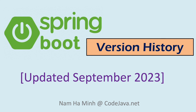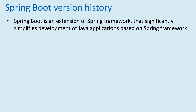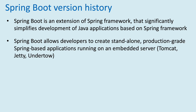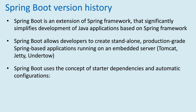In this video I'd like to share with you about the major versions and branches of Spring Boot throughout its history. Spring Boot is an extension of the Spring Framework that significantly simplifies the development of Java applications. Spring Boot allows developers to create standalone, production-grade Spring-based applications running on embedded servers such as Tomcat, Jetty, or Undertow. Spring Boot uses the concept of starter dependencies and automatic configurations that reduce development time and increase developer productivity.